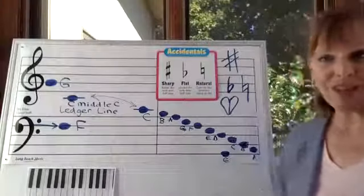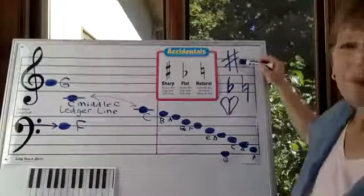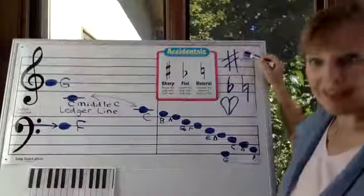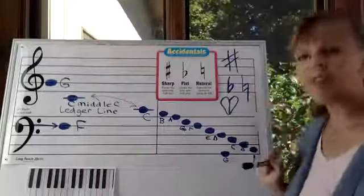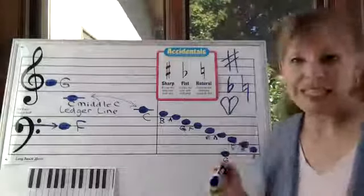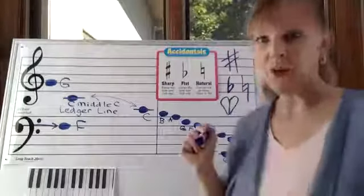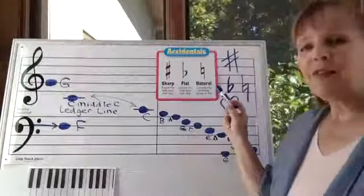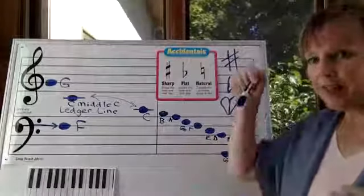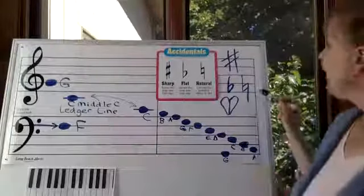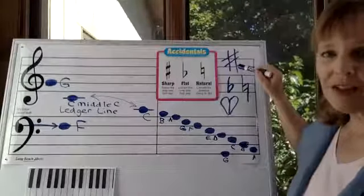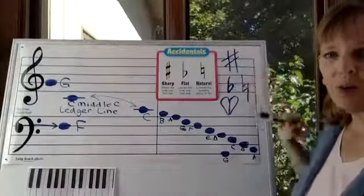And let me tell you real fast what they mean. The sharp makes the note go up a half step. The flat makes the note go down a half step. So think of it this way: if you sat on something sharp, you'd go up because it hurt you. If you got a flat tire, it makes your car go down. So that's how you can remember the difference. And then a natural cancels out the sharp or the flat.